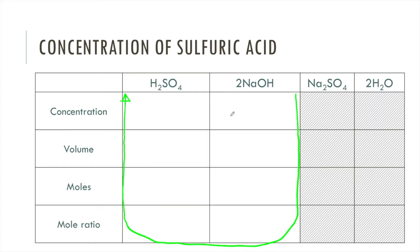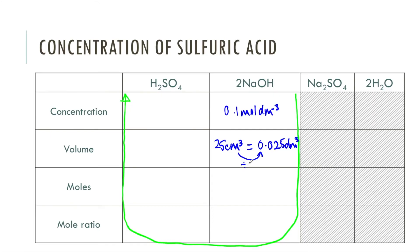The concentration of sodium hydroxide was a known value: 0.1 moles per decimetre cubed. We used a known volume of 25 centimetres cubed in the conical flask. To convert centimetres cubed to decimetres cubed we divide by 1000, giving 0.025 dm³. To work out the number of moles n, you do concentration times volume: 0.1 × 0.025 = 2.5 × 10⁻³ moles.